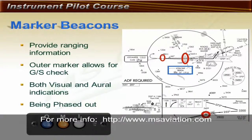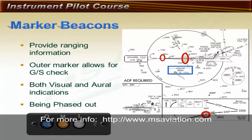Marker beacons are transmitters that emit a vertical signal that is very tightly confined, and are used to provide the pilot with range information to the airport. On an instrument approach procedure, we may have an outer and a middle marker. At the outer marker, there is an altitude depicted, providing a critical redundancy so the pilot can check that their altimeter reports the same altitude as depicted when overhead the marker beacon with the glide slope centered. If the altimeter indicates differently, the pilot may be using the wrong altimeter setting, the altimeter may be inaccurate, or the glide slope may have failed.